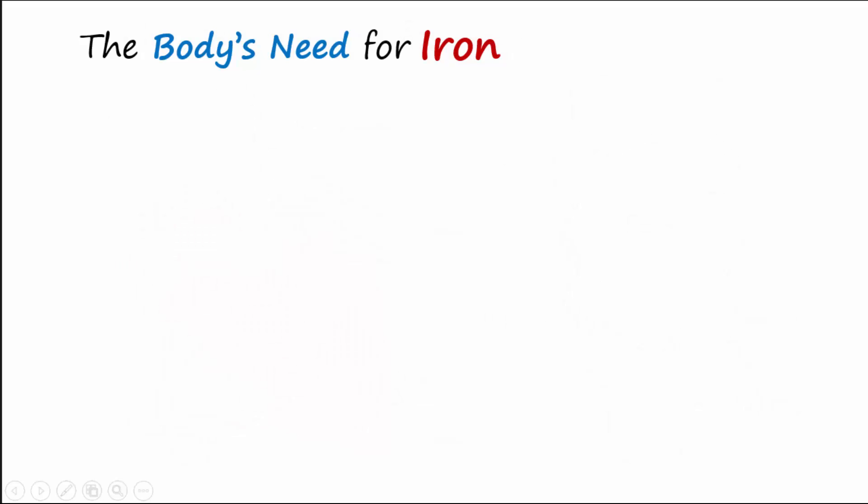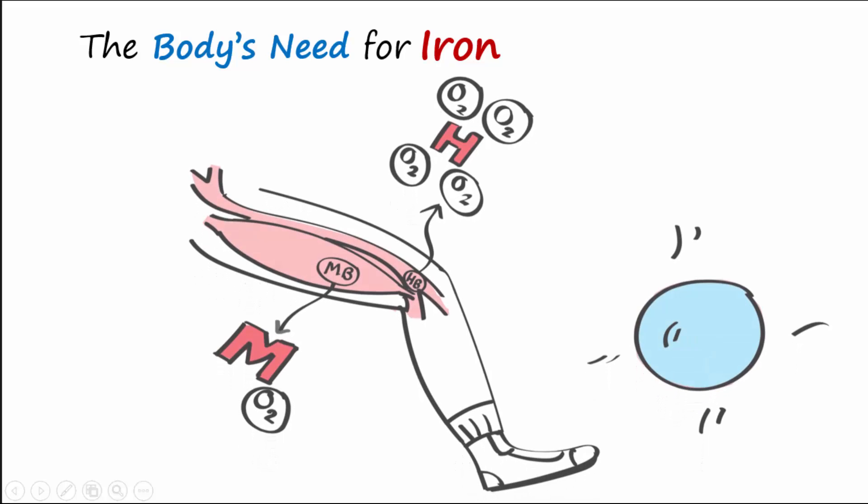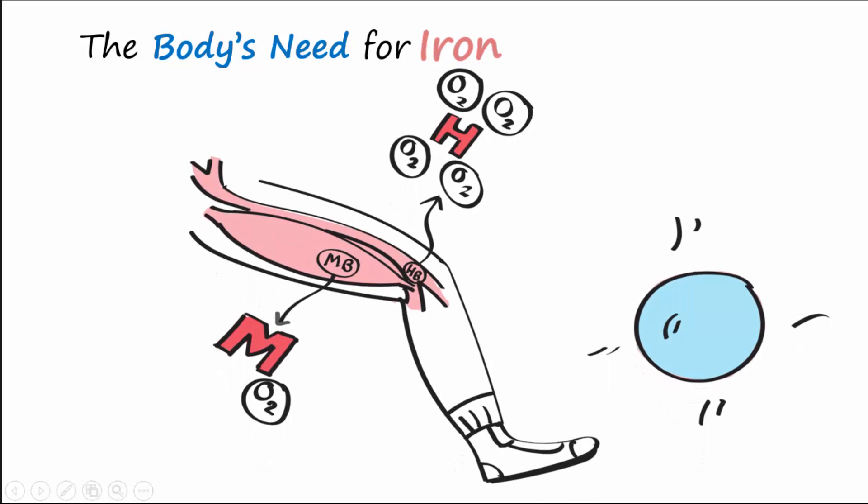Both hemoglobin and myoglobin contain iron. Whereas hemoglobin is found in the blood and is necessary for oxygen transport, myoglobin is found in muscle cells and is important for oxygen storage.